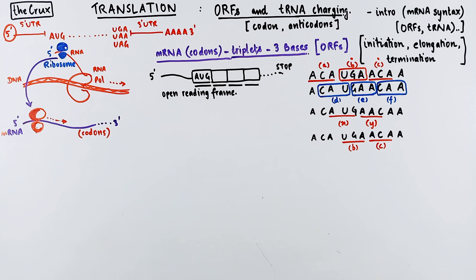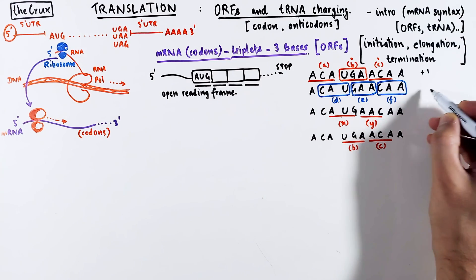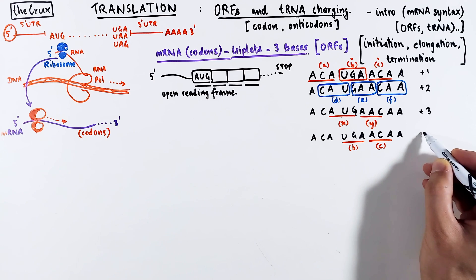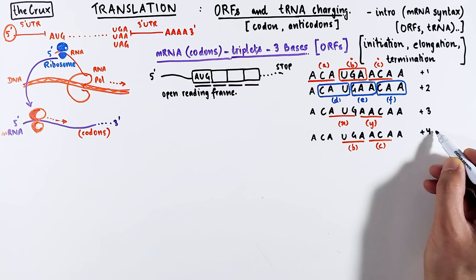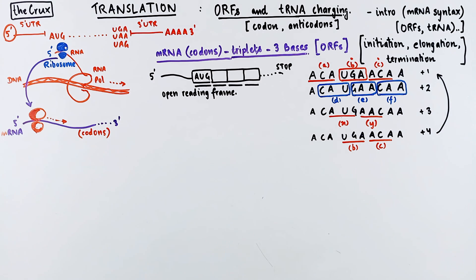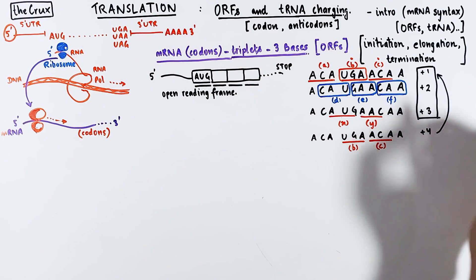So you can only have three reading frames. And each of this specific set of codons that are read are the open reading frames. The first one is called the plus one open reading frame, and if you move from that by one base, it becomes a plus two open reading frame. And if you move by two bases, you call it the plus three open reading frame. But as we just said, the plus four open reading frame looks just like the plus one. So technically there is no plus four.